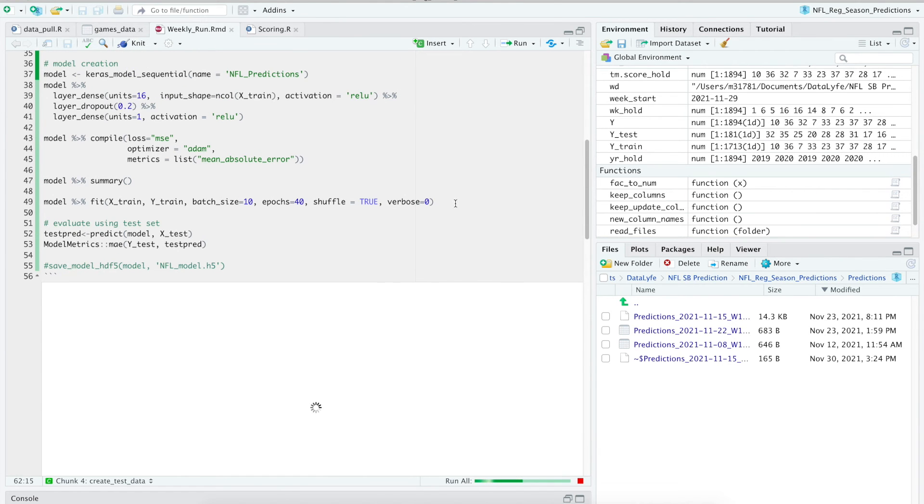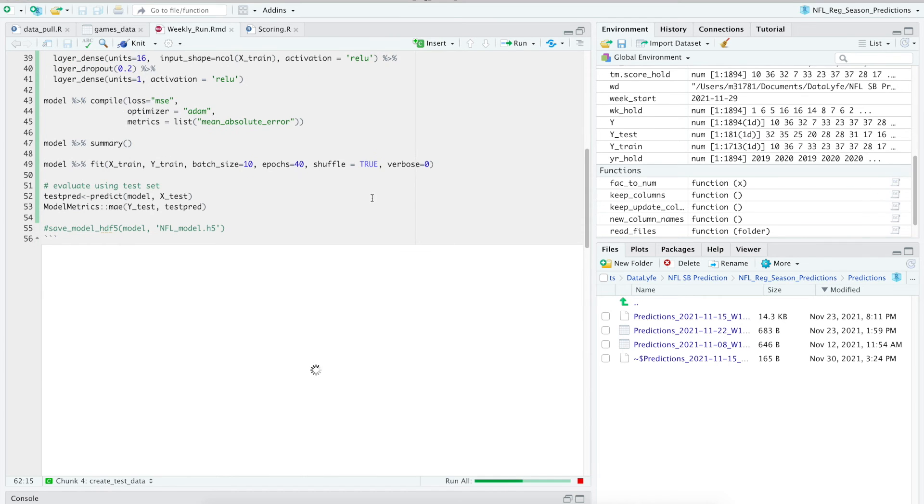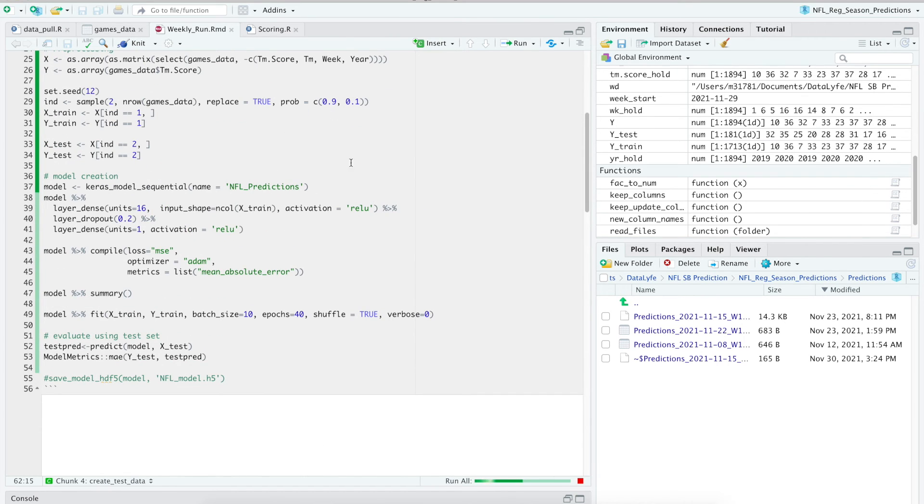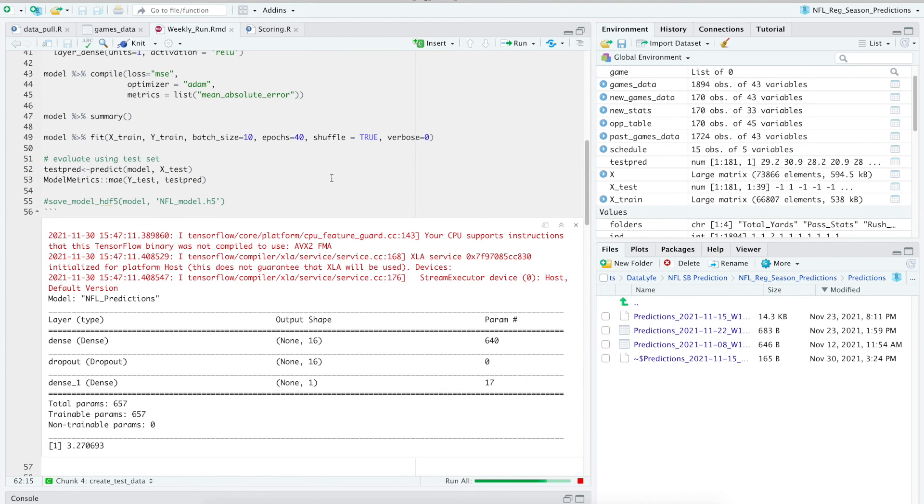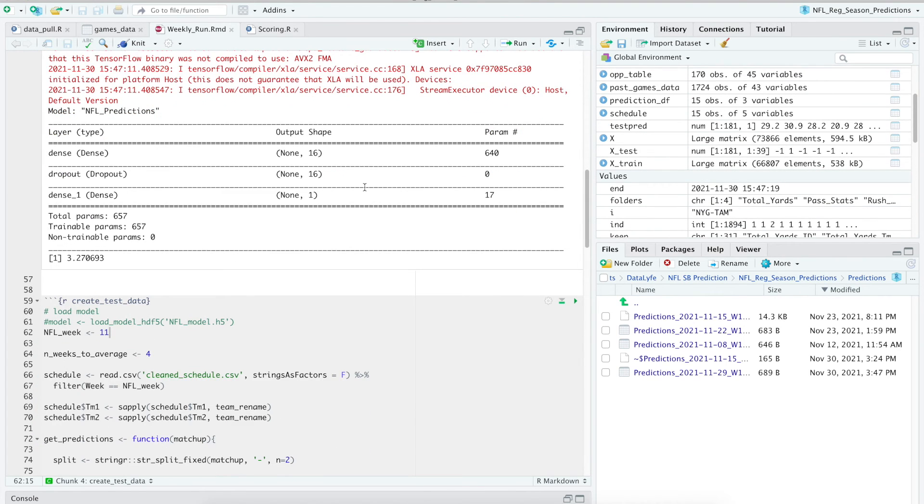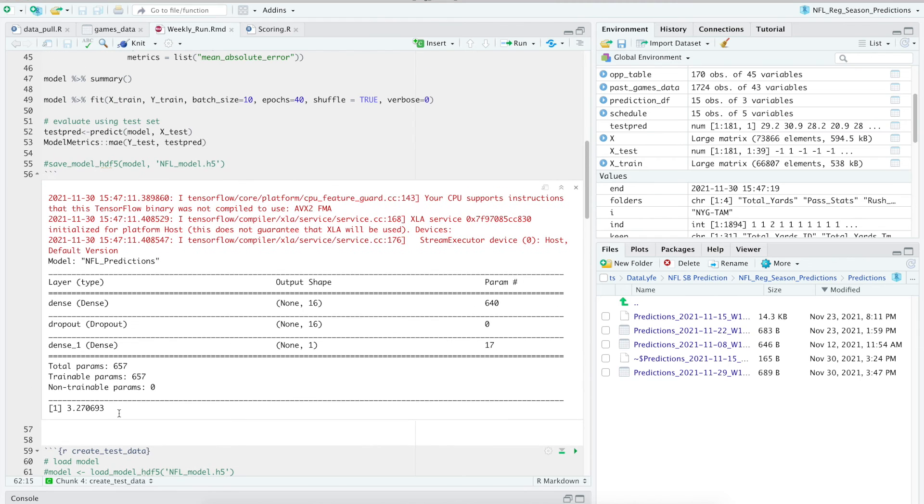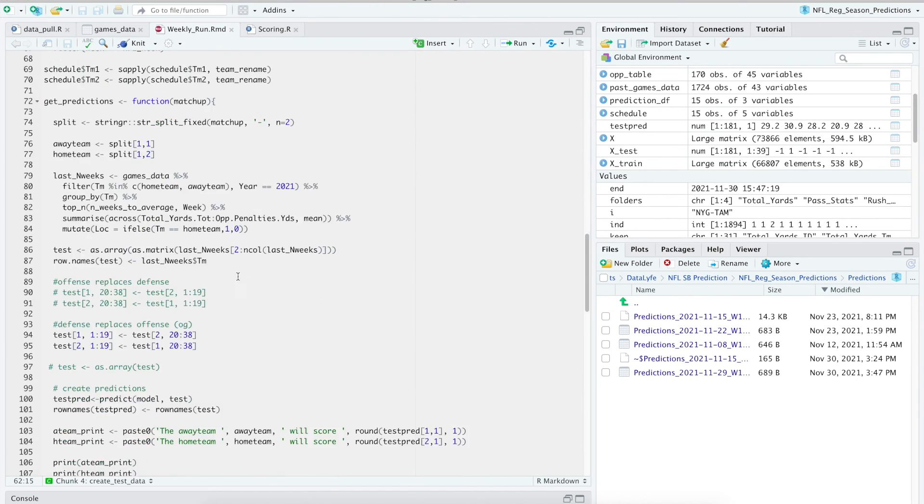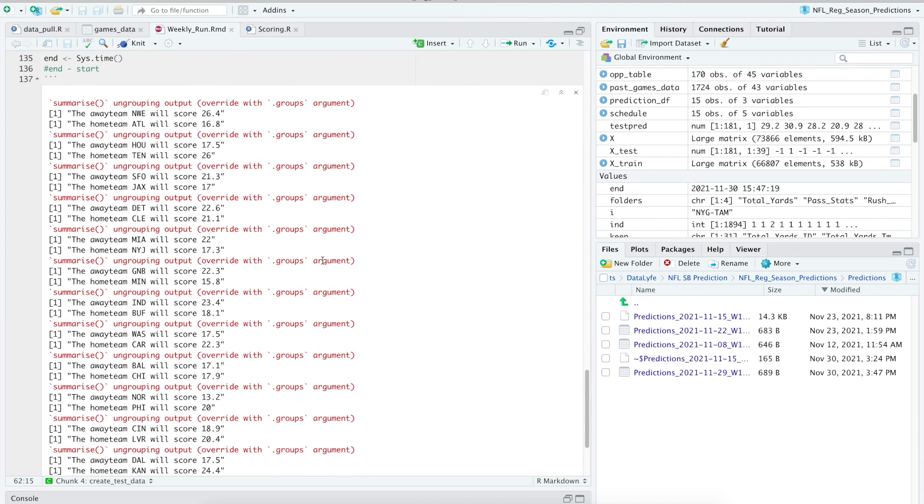The model is training right now using 90% of the training data. As you can see on the testing set, the model was off by about 3.27 points per score that it predicted, and then it will output scores for that week.